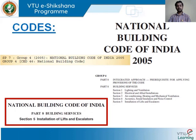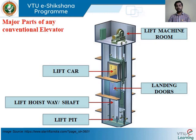Under Part 8, there are various sections. Under Section 5, the NBC deals with the installation of lifts and escalators. Let's understand some of the regulations from this particular code. To proceed further, we need to understand what are the major parts of any conventional elevator.